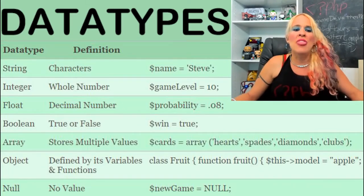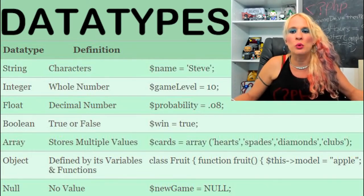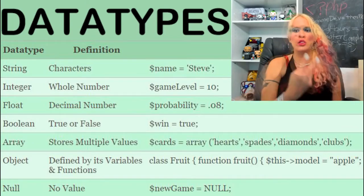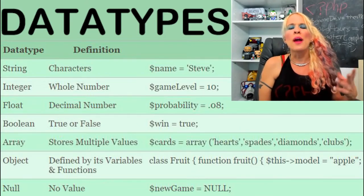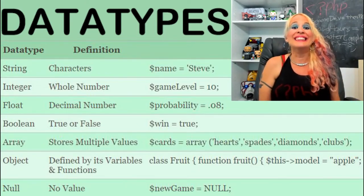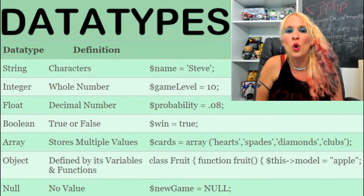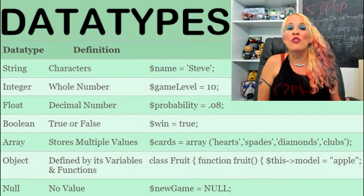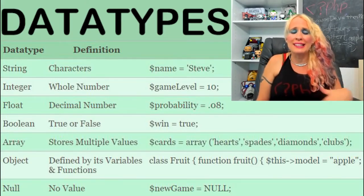Boolean is going to be true or false — a true or false variable. My example is dollar sign win equals true. Did you win? Yes or no? You can use boolean with basically anything that has two options. Say you're coding a form with a checkbox at the bottom for people to opt into your email list. You might have a variable dollar sign email list, true or false — did they give permission to be on your email list or not?